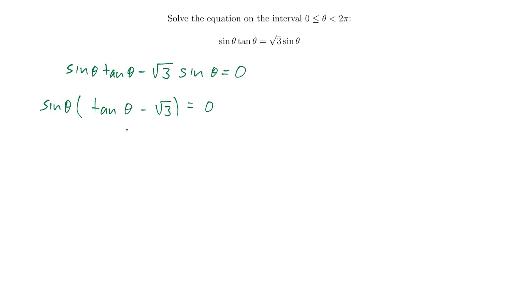So now that I've factored this, notice I've been able to separate all of the sine terms and all of the tangent terms. So that I have two trig functions doesn't actually matter here because I was able to separate them. Now, I have a product of two things equals 0. The only way that can happen is if either sine of theta equals 0 or tangent of theta minus the square root of 3 equals 0.